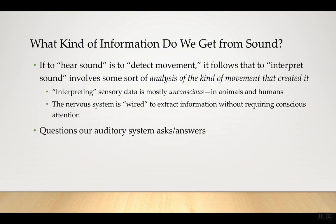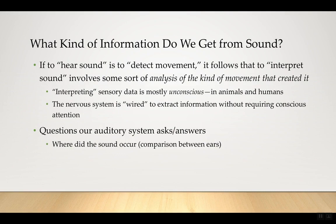We can think about questions our auditory system asks and answers — how it has developed over evolutionary time to interpret sound. It asks: where did that sound come from? One of the main ways it does this is by comparing sound between the two ears. If it's louder at one ear than the other, arrives more quickly, or has a slightly different frequency spectrum at one ear versus the other — because the head changes the frequency spectrum — these cues help localize the source.